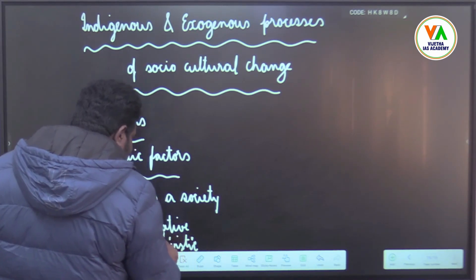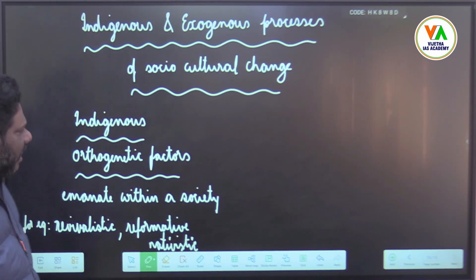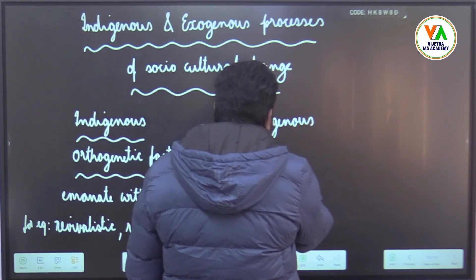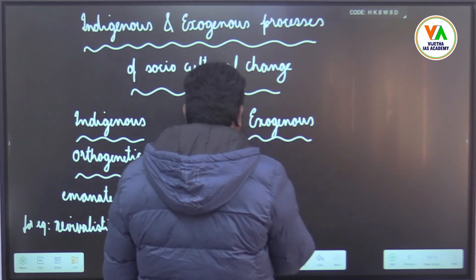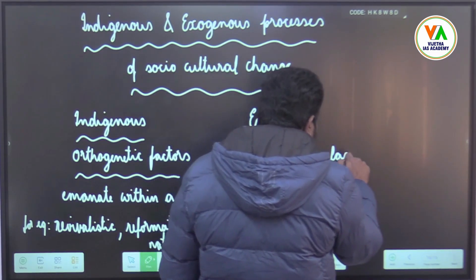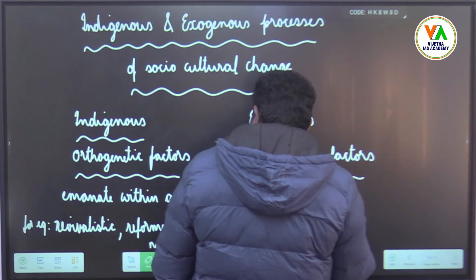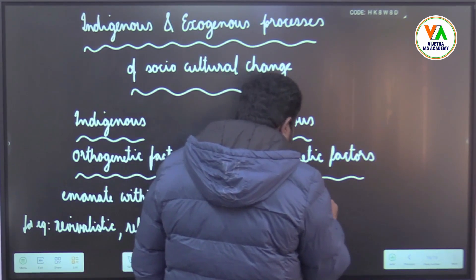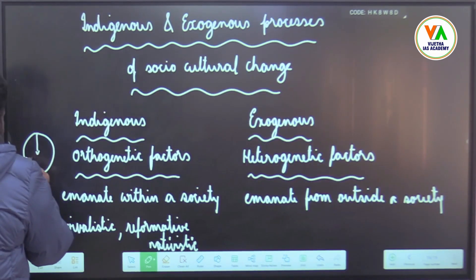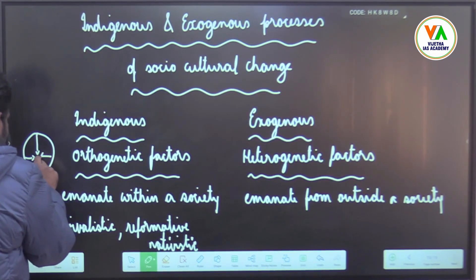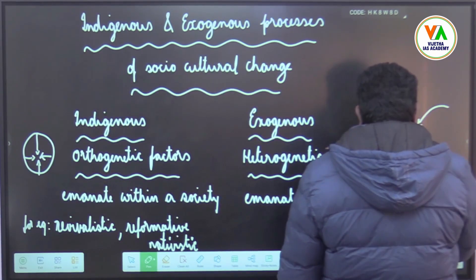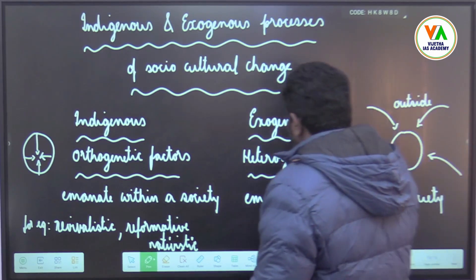These are movements which are trying to create a change and these are from within the society. Whereas exogenous processes, or exogenous factors, they are heterogenetic in nature and hence called heterogenetic factors, and these emanate from outside a society. The factors within a society creating change are orthogenetic, but those influenced by outside are known as heterogenetic.